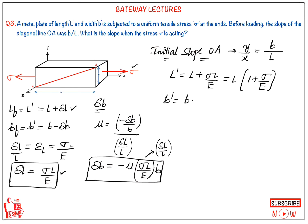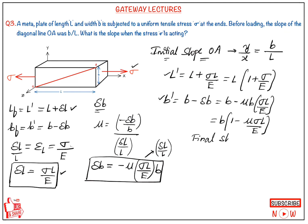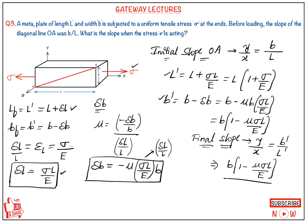Similarly, B dash = B minus delta B = B minus mu × B × sigma upon E = B × (1 minus mu × sigma upon E). Now the final slope = B dash upon L dash = [B × (1 minus mu × sigma upon E)] divided by [L × (1 plus sigma upon E)]. This is our final answer.